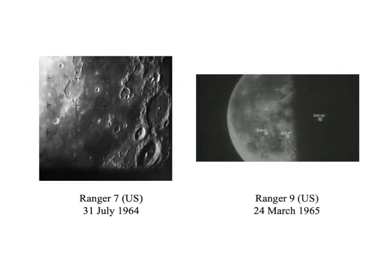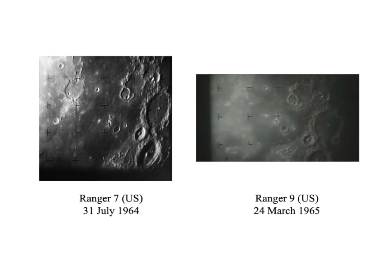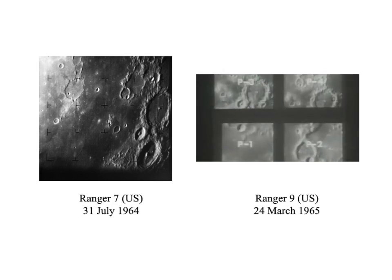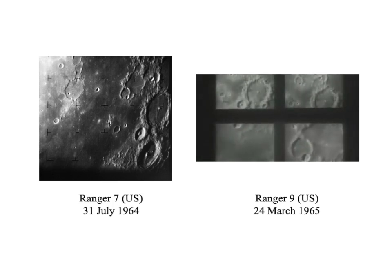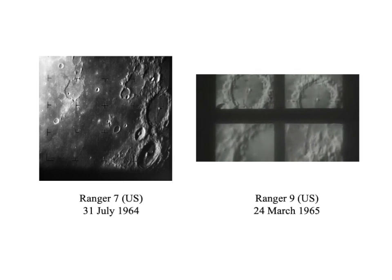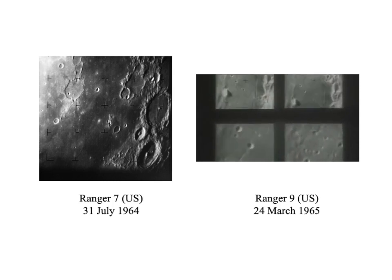Unlike Rangers 7 and 8, which impacted Maria, Ranger 9 was directed at a highland crater of more specific scientific interest, the crater Alphonsus. The Ranger 9 spacecraft impacted on the Moon on 24 March 1965. Total spacecraft travel time on its picture-taking journey to the Moon: 64 hours, 31 minutes, 12 seconds. Each of the four cameras sent a total of 1,340 high-quality pictures to the receiving station at Goldstone, California. Distance traveled: 414,629 kilometers. The spacecraft at impact was traveling at a velocity of just under 9,600 kilometers per hour.